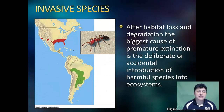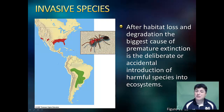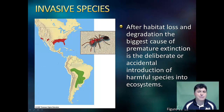After habitat loss and degradation, the biggest cause of premature extinction is the deliberate or accidental introduction of a harmful species into an ecosystem, like the Argentinian ant. Most species introductions are beneficial to us, though they often displace native species. We depend heavily on introduced species for ecosystem services, food, shelter, medicine, and aesthetic enjoyment. Introduced corn, wheat, rice, and other food crops provide more than 98% of the U.S. food supply, and non-native tree species are grown in 85% of the world's tree plantations. The problem is that many introduced species have no natural predators, competitors, parasites, or pathogens to control their numbers, and such non-native species can wipe out populations of native ones.